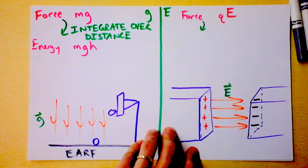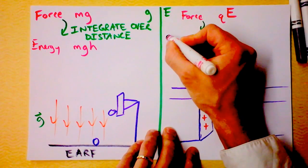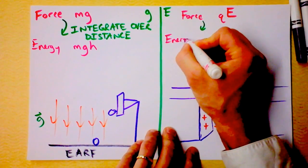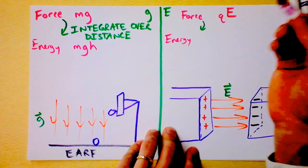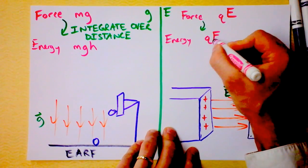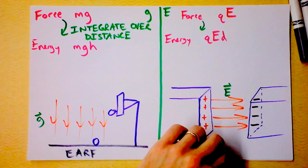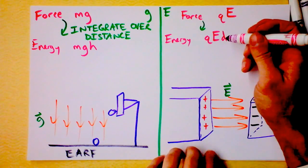So it's m times g times h. And we'll get a very similar result by integrating over distance. I'll give you the same arrow here because it's the same process. Then we're looking to say that energy for an electric field situation, where it's a uniform electric field, that's very important, is going to be q times E times distance, distance moved.